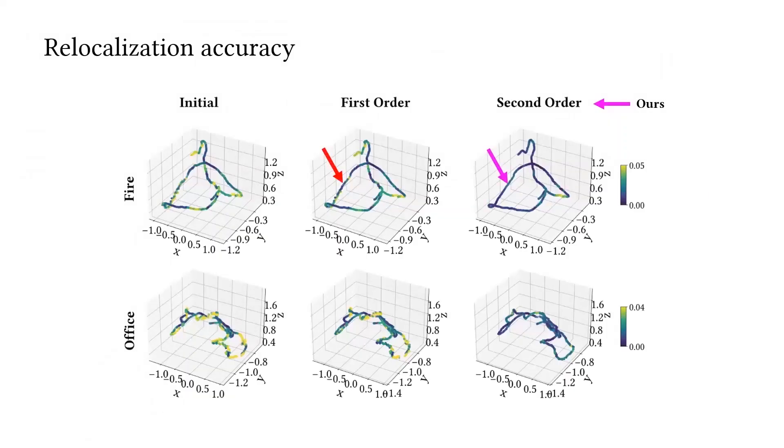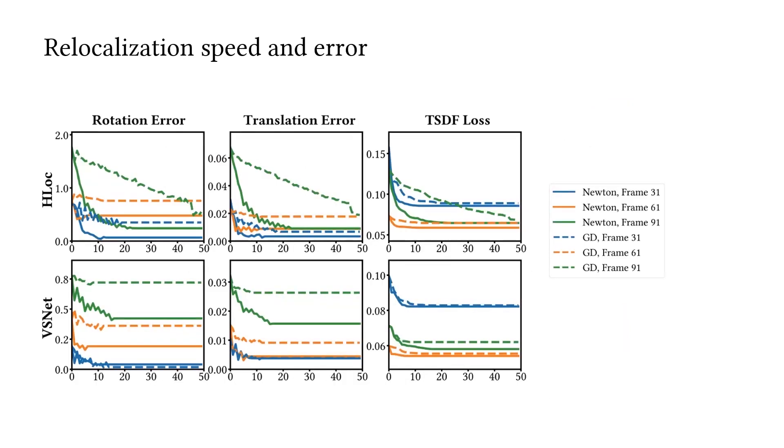We also present the performance. Our method uses high-order optimization and is more accurate than first-order. Compared to gradient descent, our method can achieve lower error and faster convergence speed by using high-order optimizer, like Newton's method.